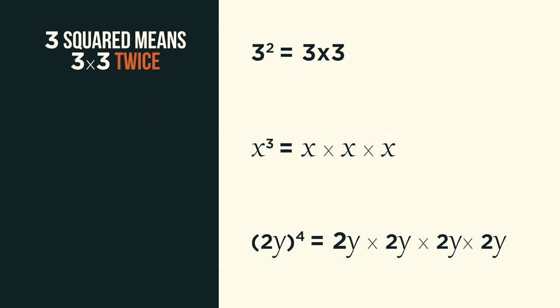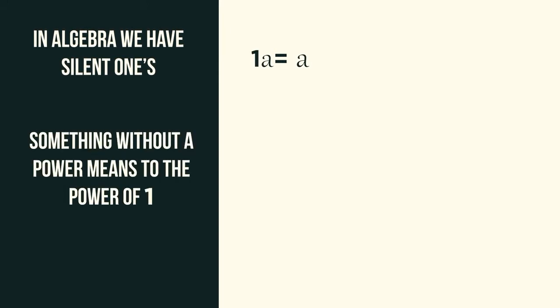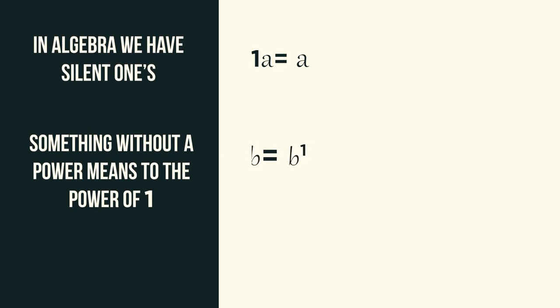You know how in algebra we have silent ones? So we don't write 1a, we just write a. Something without a power, so b for example, really means b to the power of 1. But the 1 is silent so we don't write it.